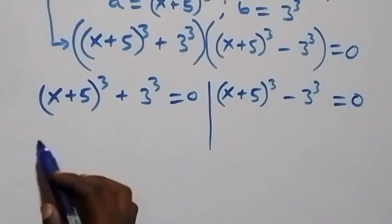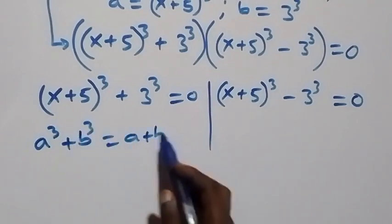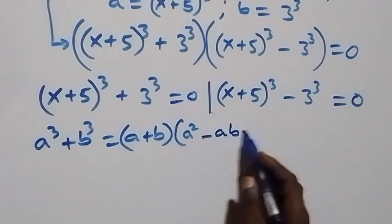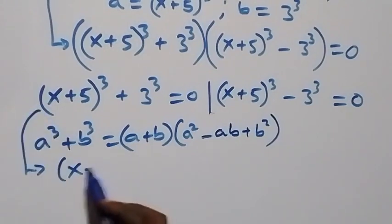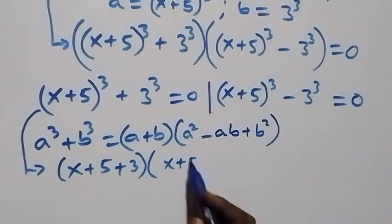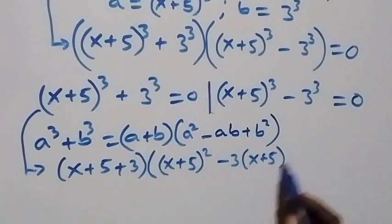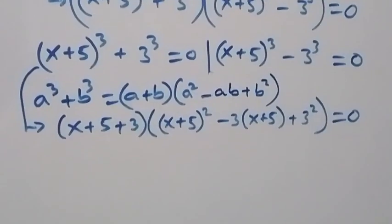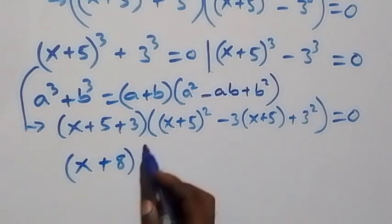For the first case, solving x plus 5 raised to power 3 plus 3 raised to power 3 equals 0. This follows from the identity a cubed plus b cubed equals a plus b times a squared minus ab plus b squared. So this becomes x plus 5 plus 3, in brackets, times x plus 5 all squared minus 3 times x plus 5 plus 3 squared, close bracket, equals 0. That is x plus 8, into brackets.